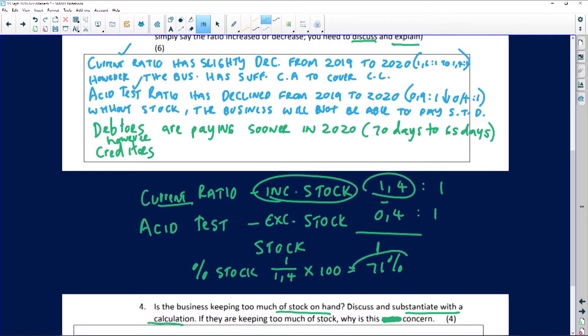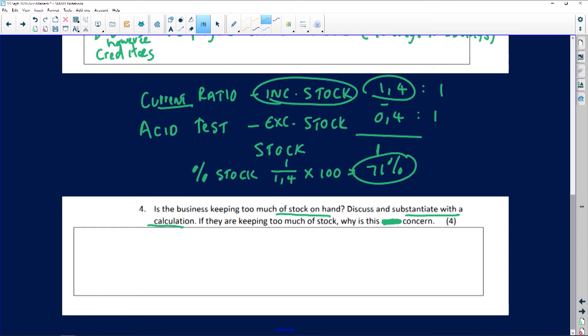So in other words, the current assets, 71 percent of current assets is made up of stock. Okay, so is the business keeping too much of stock? The answer is yes, because the majority of current assets or 71 percent of current assets consist of inventory or you can say trading stock. Right, so there's your calculation. Immediately you're obviously getting marks for showing that calculation. Remember you could show it as a ratio instead of as a percentage, that is also acceptable.